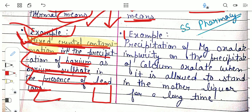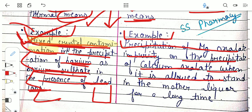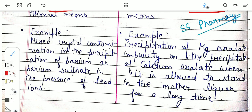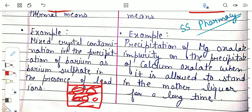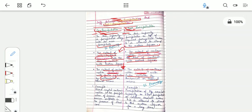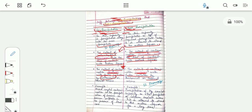The example of post-precipitation is the precipitation of magnesium oxalate as an impurity on the precipitate of calcium oxalate when it is allowed to stand in the mother liquid for a long time. When precipitating calcium oxalate from a solution, if it is left in the mother liquid and magnesium ions are present, the magnesium ions also precipitate as magnesium oxalate and get deposited on the calcium oxalate precipitate, making it impure. This is post-precipitation — occurring after the main precipitate has formed.